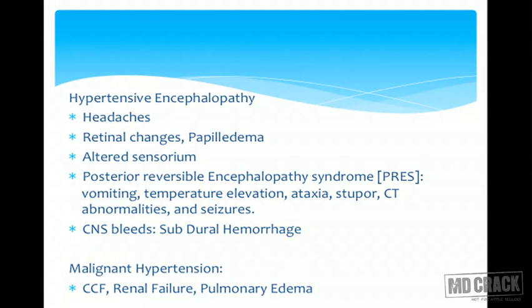In severe hypertension, hypertensive encephalopathy presents with headaches, retinal changes, papilledema, altered sensorium, and sometimes severe intraventricular or subarachnoid bleeds. The typical MRI picture is posterior reversible encephalopathy syndrome, also called PRES syndrome. A child presenting with vomiting, temperature elevation, ataxia, stupor, and seizures along with hypertension will show posterior reversible encephalopathy findings on MRI. Malignant hypertension is rapid and severe hypertension causing congestive cardiac failure, renal failure, and pulmonary edema.